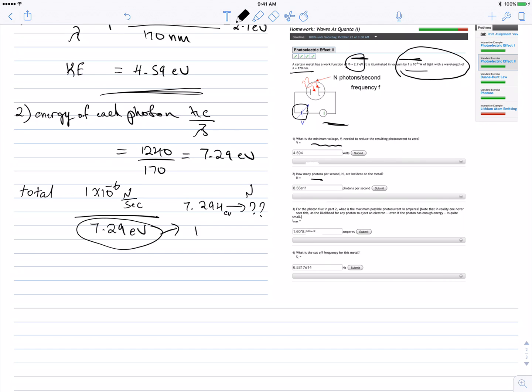So 7.29 electron volts - each electron volt equals 1.6 times 10 to the negative 19 joules. Multiply this by this, I got 1.167 times 10 to the negative 18 joules.